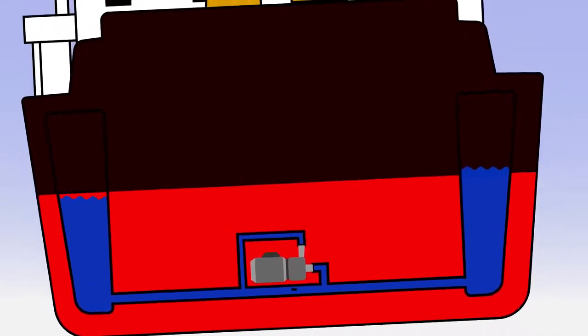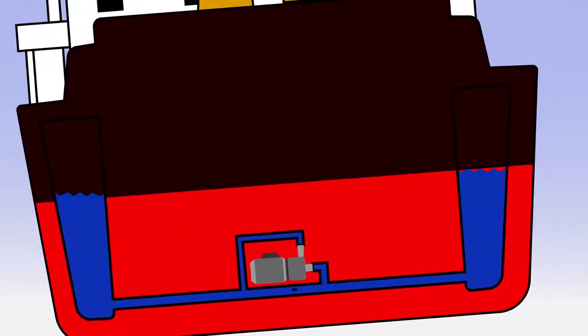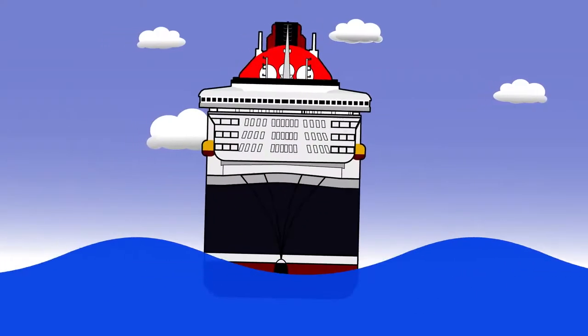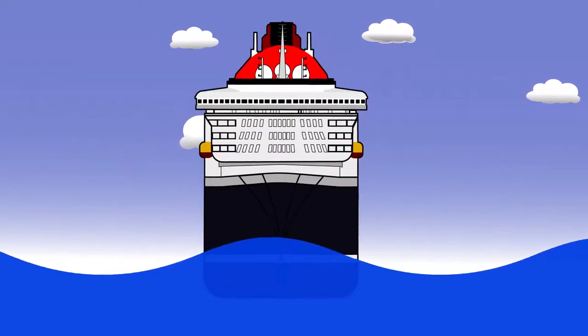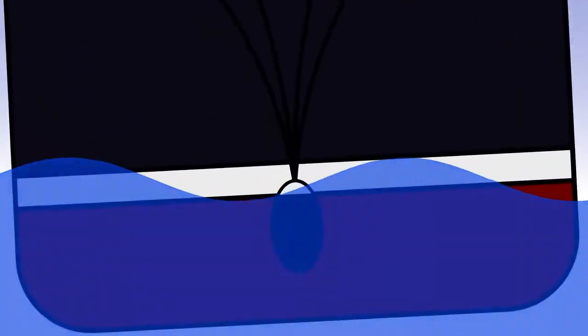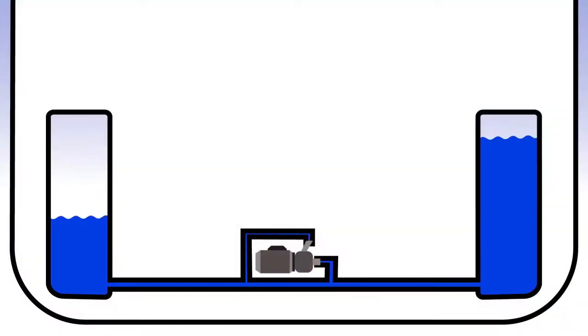This would be a fully active system, and these sort of stabilizers are good on ships. They would work okay on cruise ships, as they can actively counter the force of the roll as it's happening. Unfortunately, it does take time to pump water across, so you still haven't achieved instant stabilization.